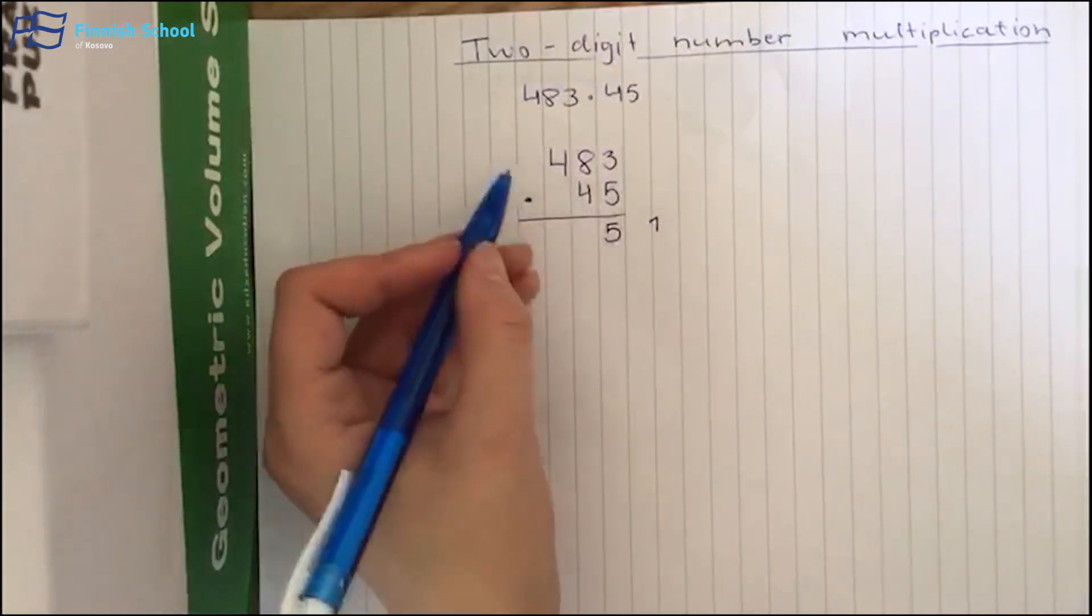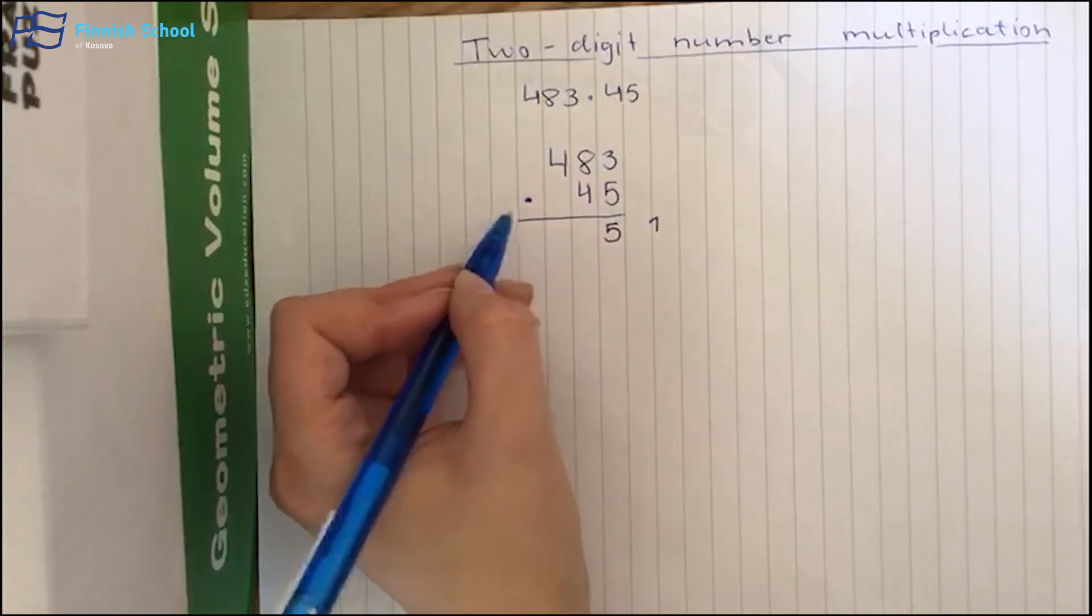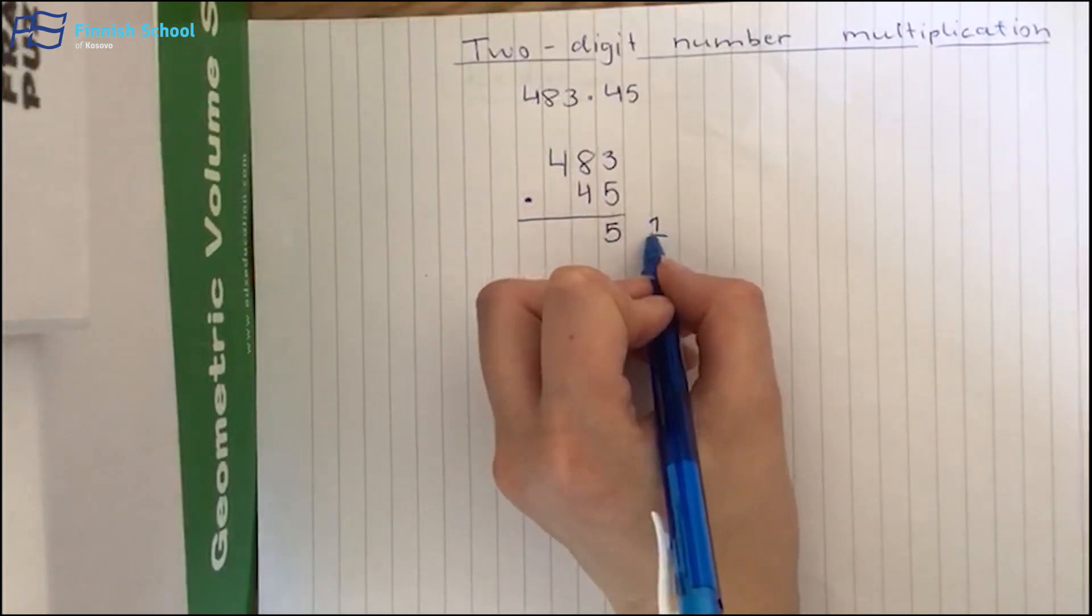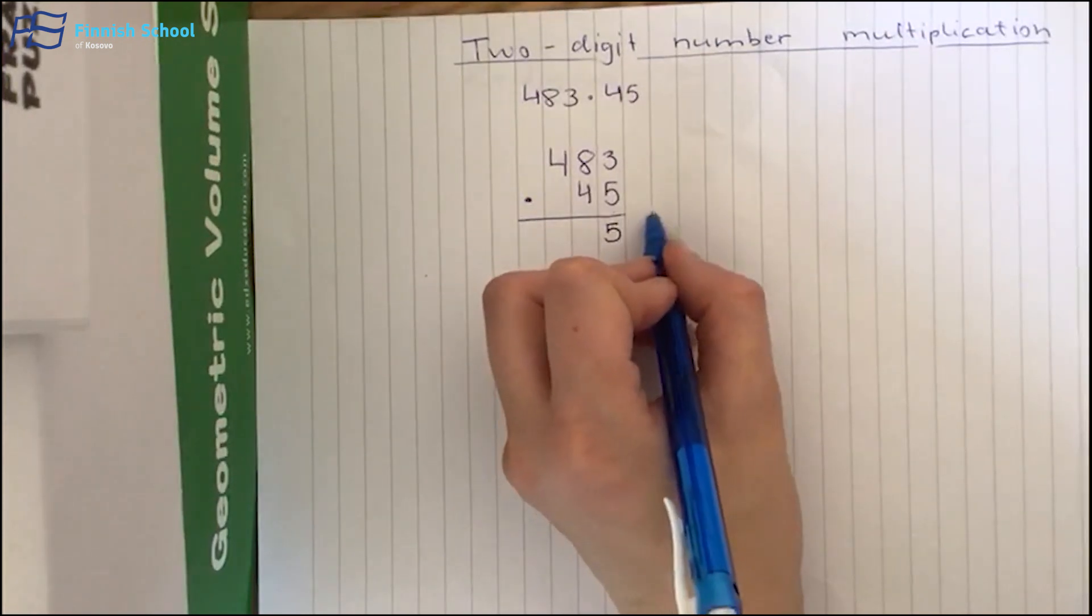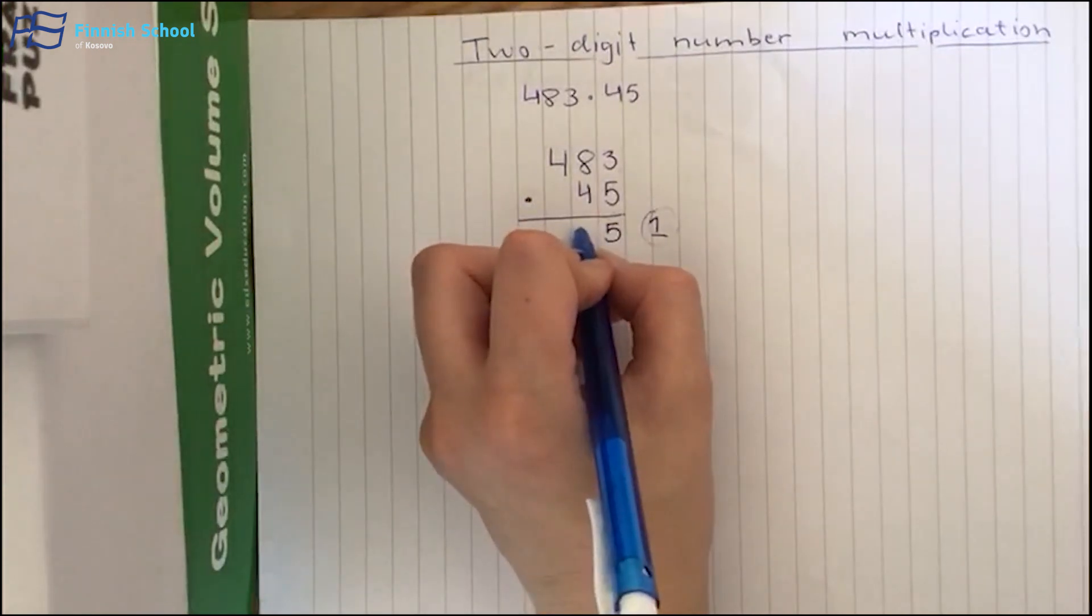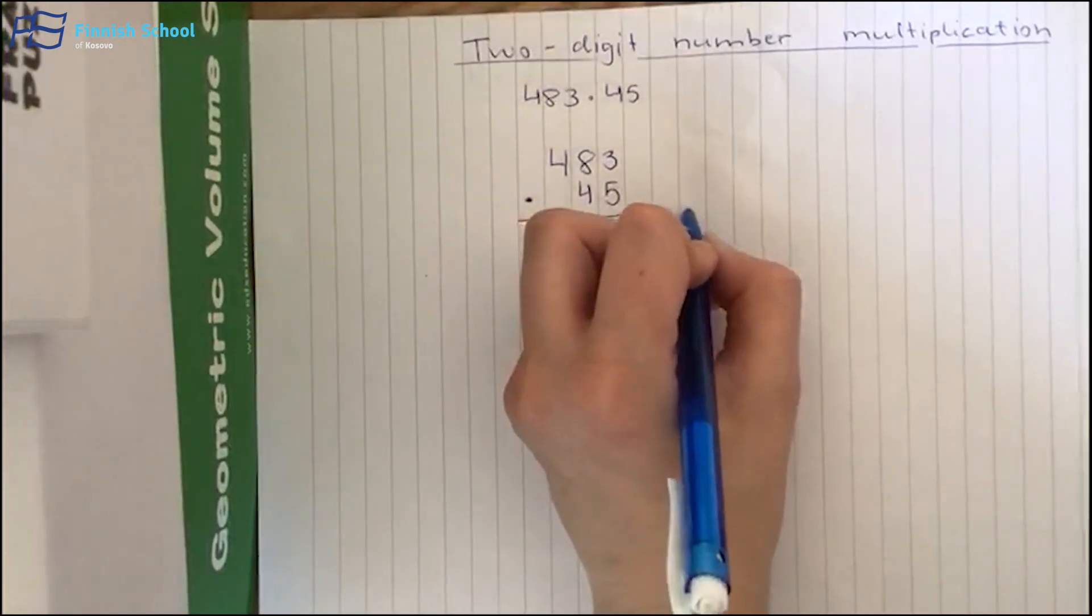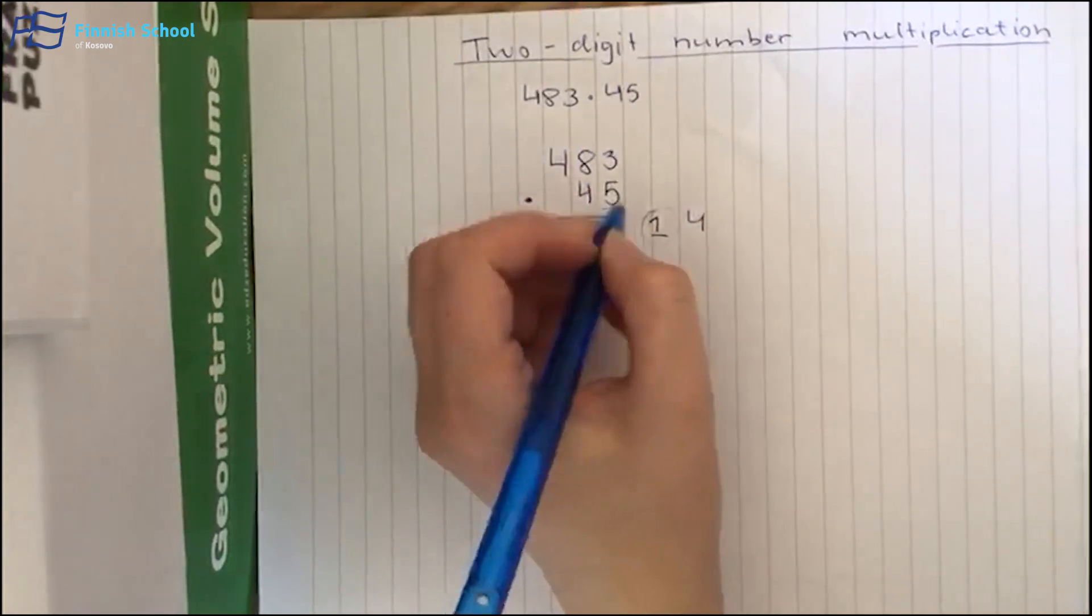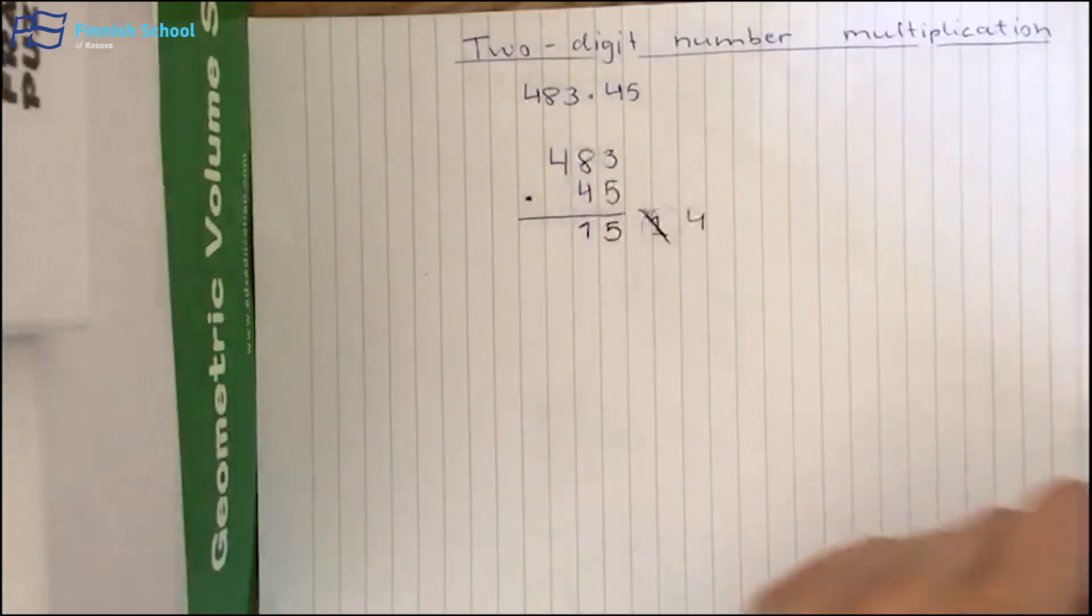Okay, next one. 5 times 8, it's 40. But now we have to remember this number. So it's 41. 40 plus 1 is 41. And now we put number 1 here and number 4 comes here. We have used the number 1. We can put it like this.